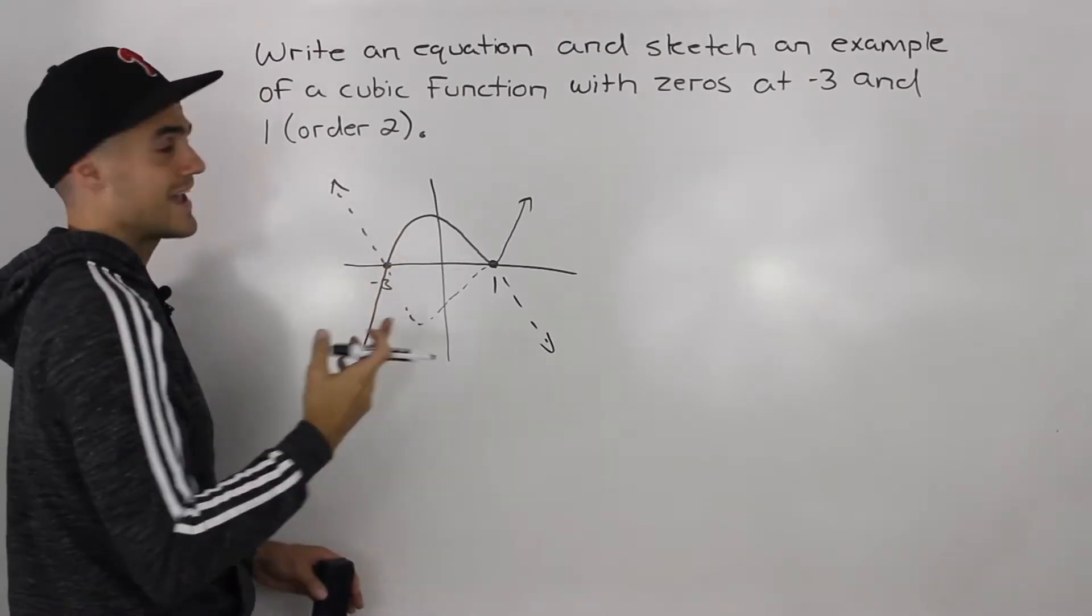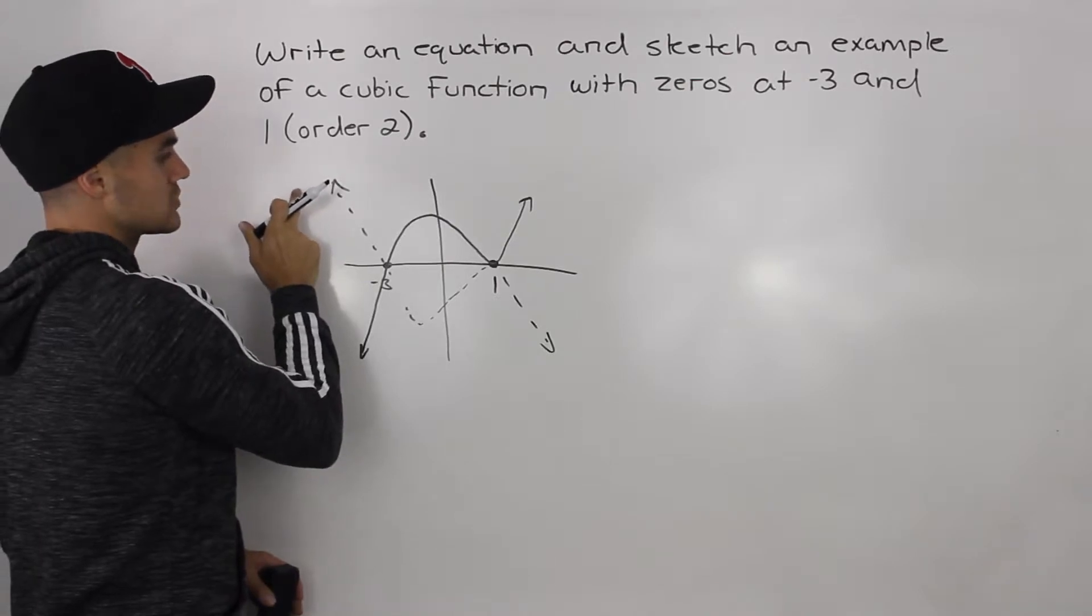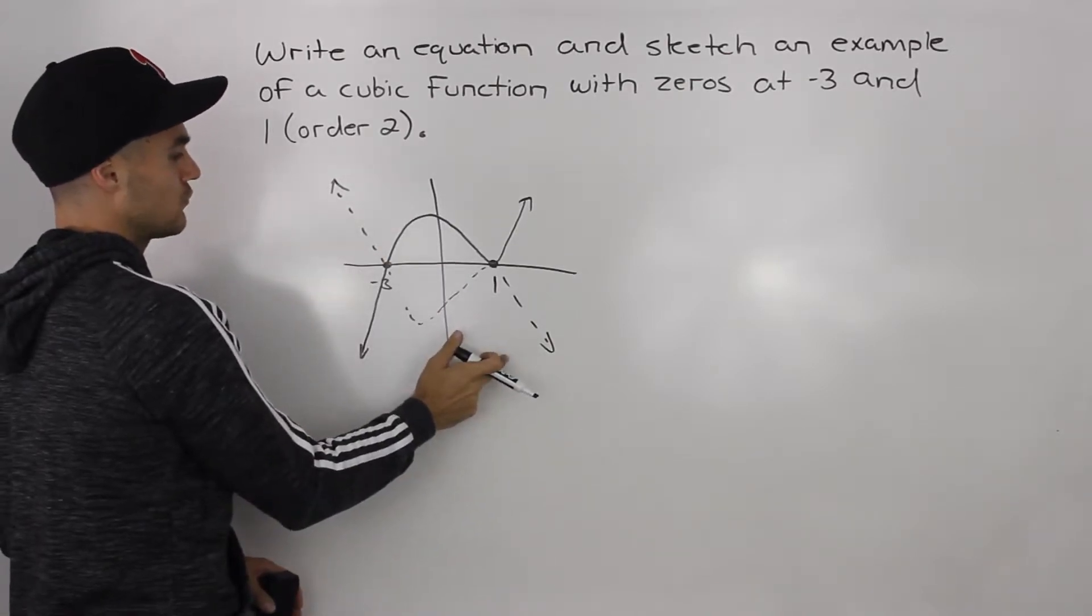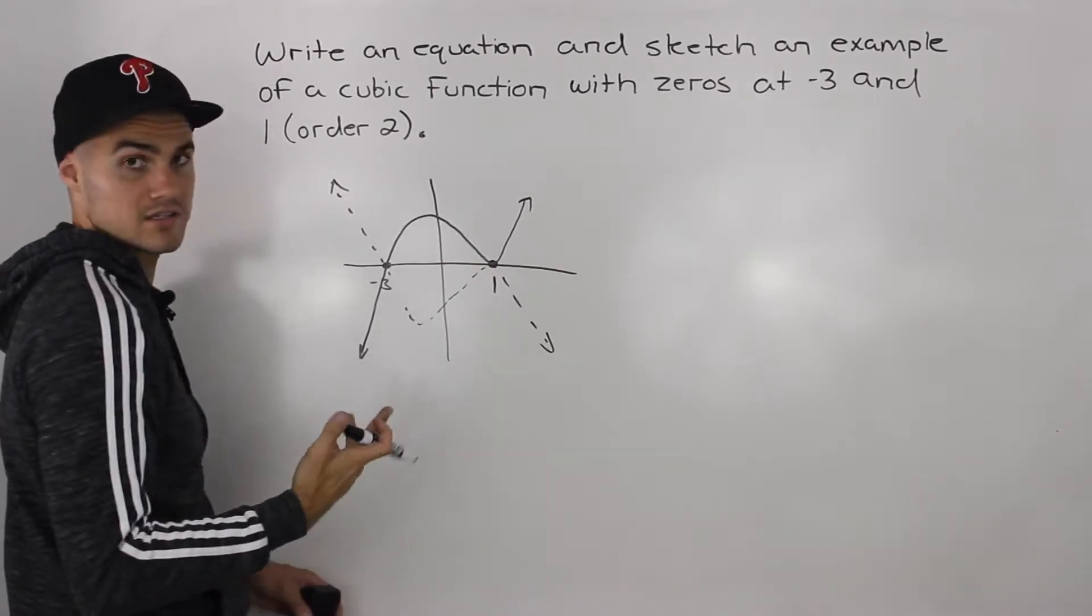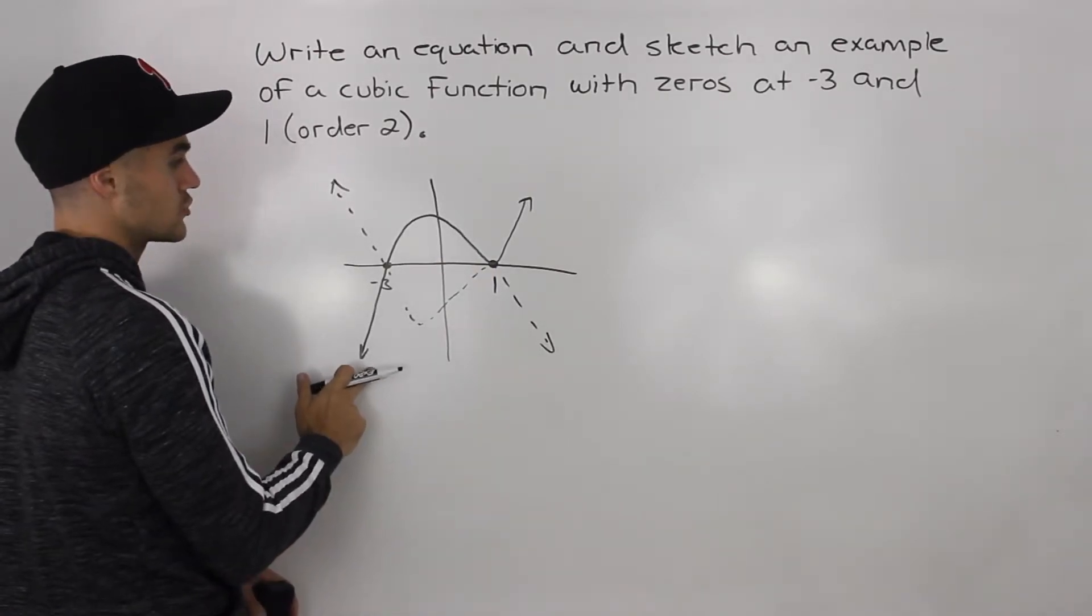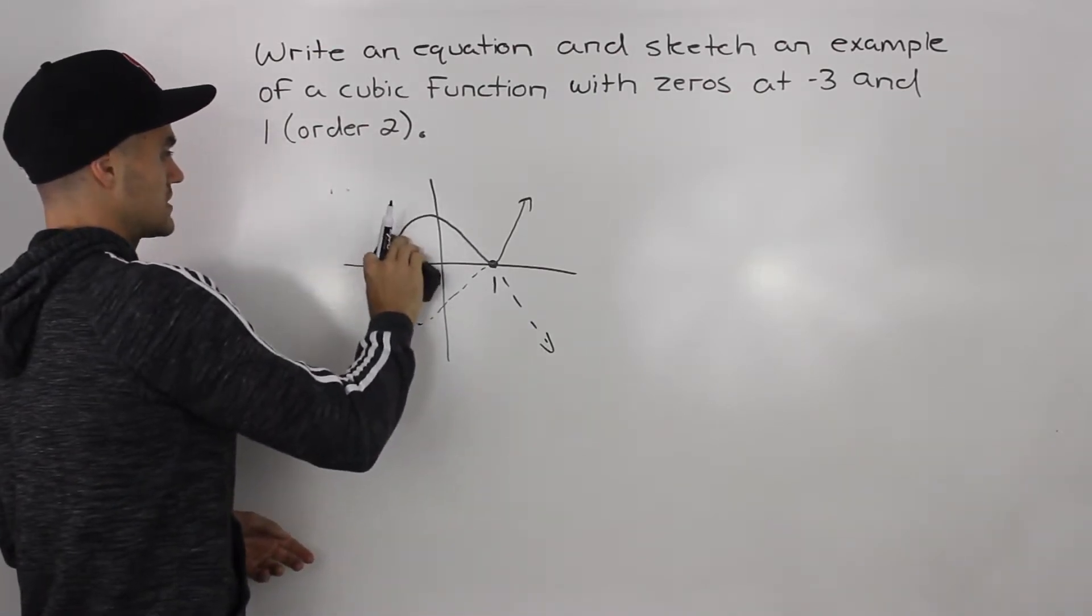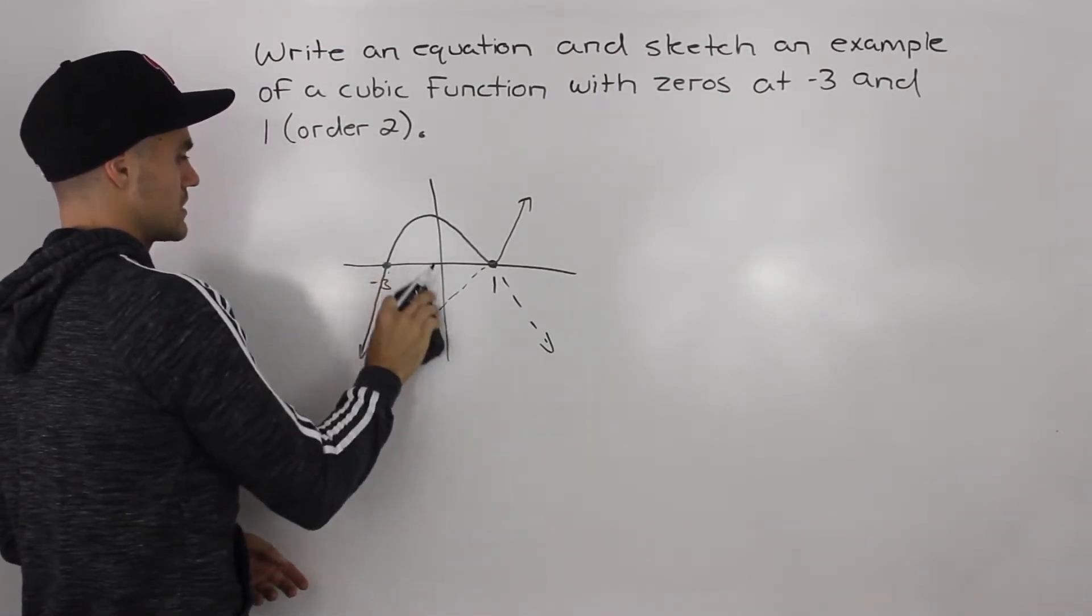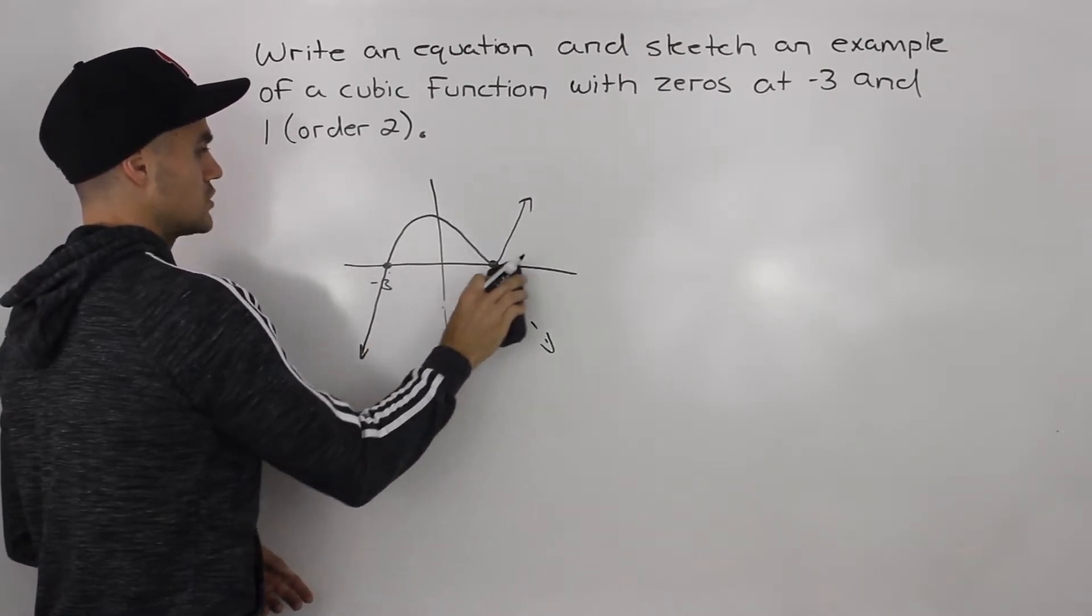That would mean it's a negative leading coefficient because we're starting in quadrant 2, ending in quadrant 4. This original graph that we drew has a positive leading coefficient. Starts in quadrant 3, ends in quadrant 1. But either way works. So let's stick with the positive leading coefficient that we initially drew.